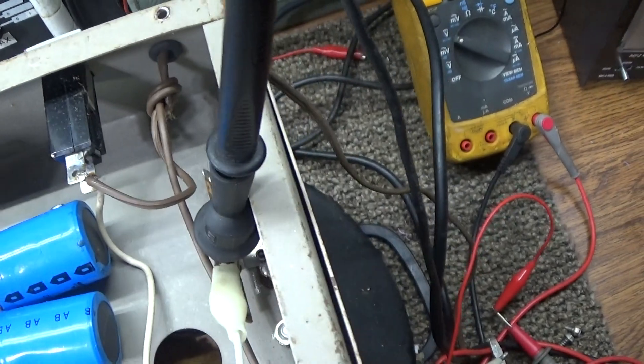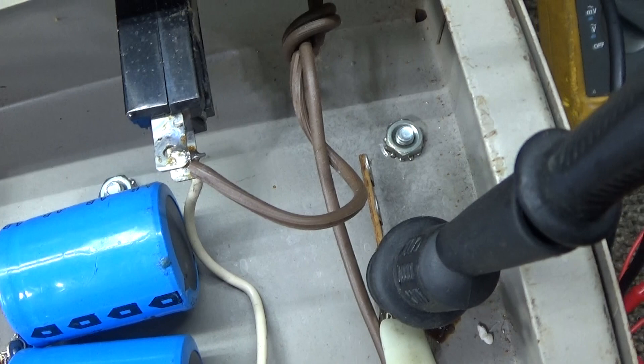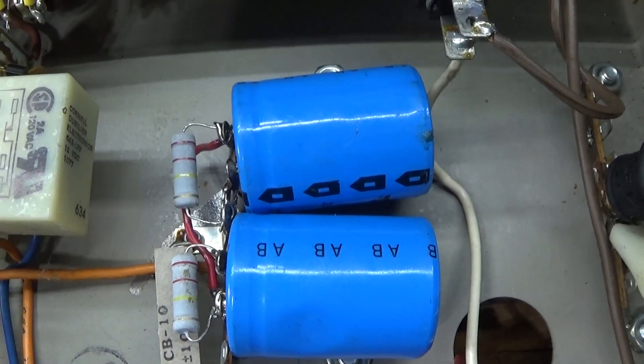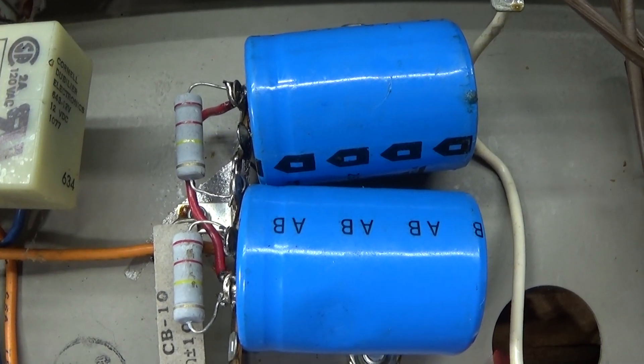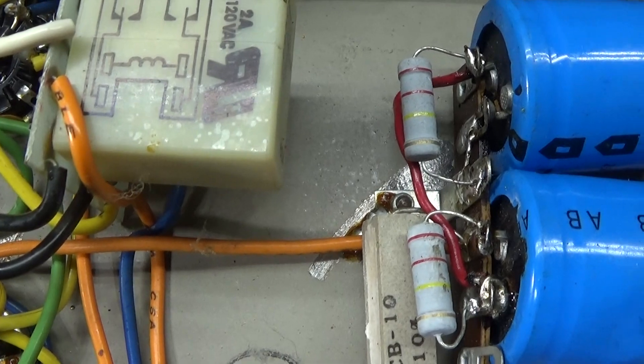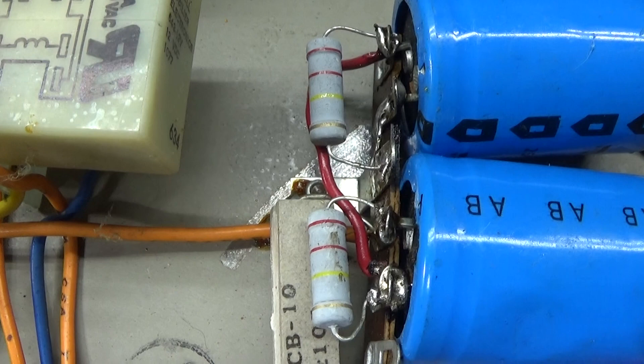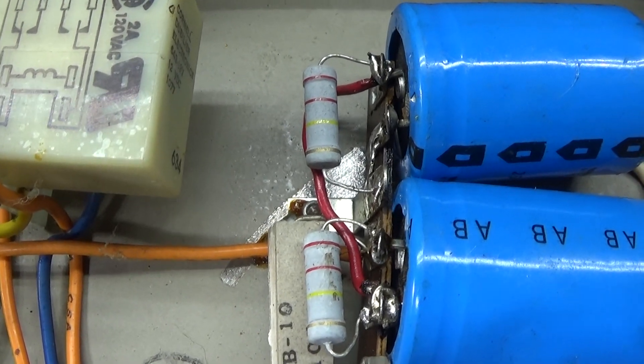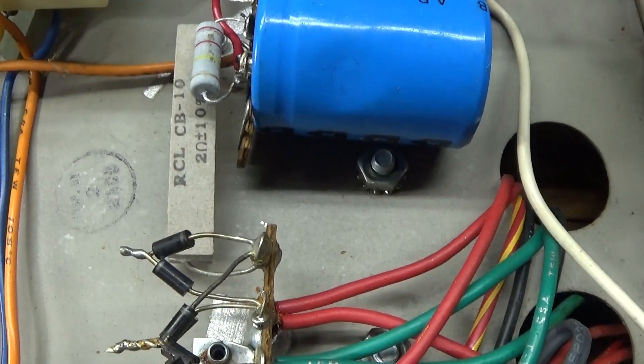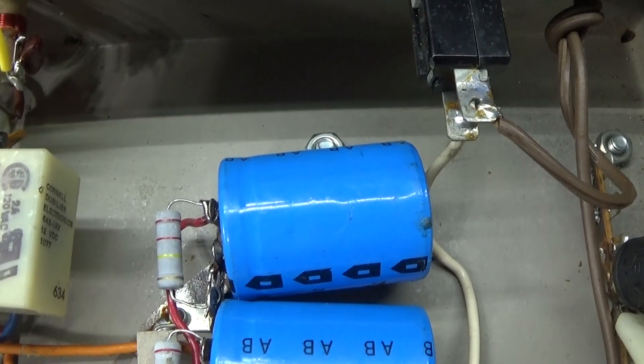It's got the new caps and new bleeders too because this amp originally didn't have bleeders. That's the new caps, the blue ones on the right, big blue snap-in type caps. And those two resistors to the left of the big blue caps are added bleeder resistors that I put in myself because the amp didn't have bleeders.